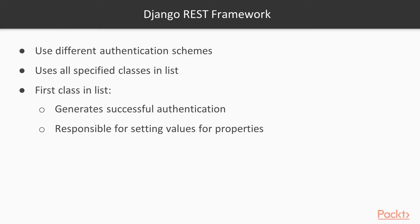Our current version of the API processes all the incoming requests without requiring any kind of authentication. Django REST framework allows us to easily use different authentication schemes to identify the user that originated the request or the token that signed the request. A list of classes specifies the authentication schemes. The first class in the list that generates a successful authentication, in case we specify more than one class, would be responsible for setting the values for the two properties.